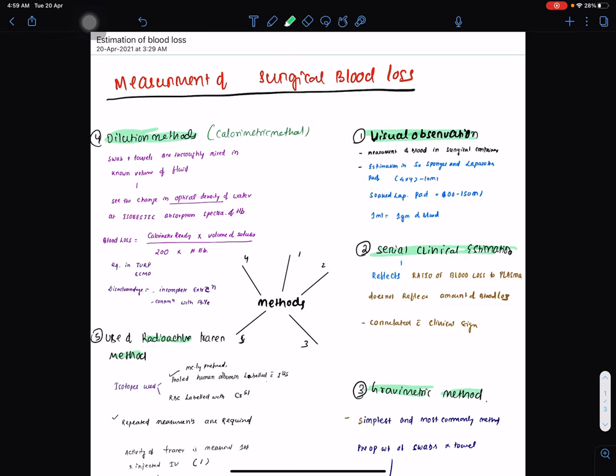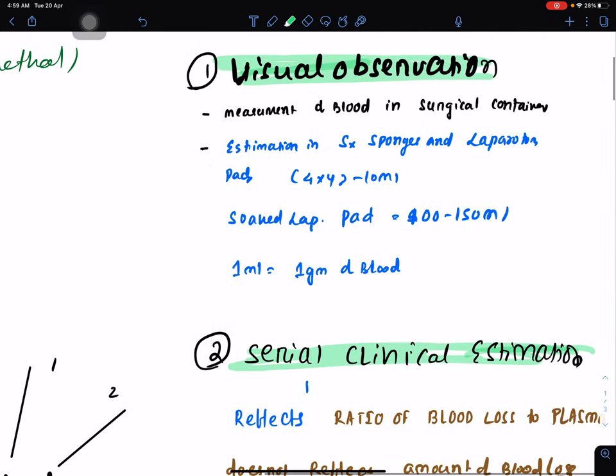Visual observation involves measurement of blood in surgical containers—you can directly see it—or estimation in surgical sponges or laparotomy pads. A 4x4 cm fully soaked gauze piece will accommodate 10 ml of blood, and a soaked laparotomy pad is 100 to 150 ml.